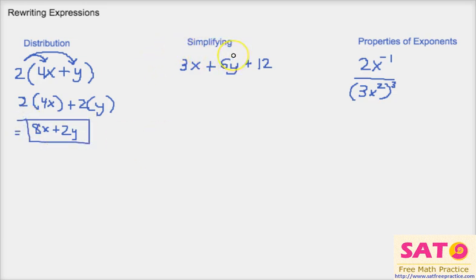So simplifying is pretty much the reverse of distribution. Instead of trying to distribute the number, we're trying to make it into the form of its simplification. So we have to figure out what all of these have in common first. So out of 3x, 6y, and 12, what do they share?